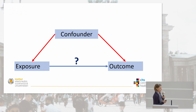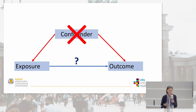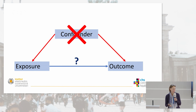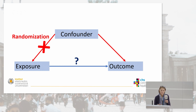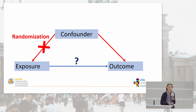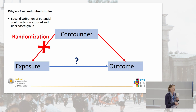To put this in more general terms: we have an exposure, an outcome, and a confounder. What we usually do in epidemiology is adjust for these confounders. With subject matter knowledge, we know what the important confounders are, we measure them, and we take care of them either by design or in the analysis phase — we adjust, match, or stratify. The other thing you can do is randomize, which deletes the association between confounder and exposure. This is why we like randomized studies — we get an equal distribution of potential confounders in the exposed and unexposed groups.